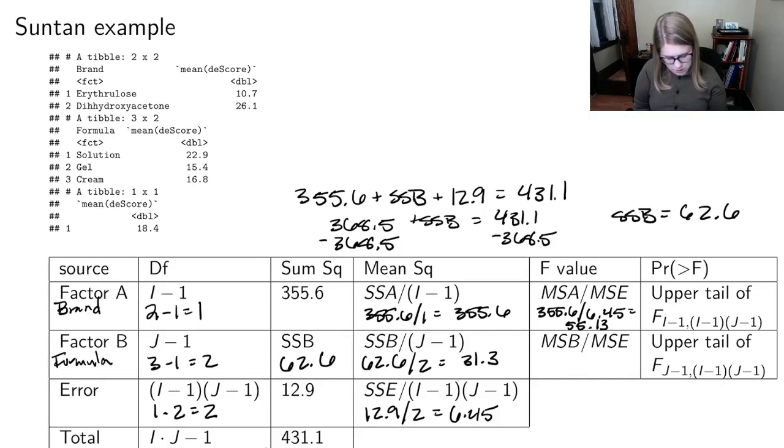And then for the mean square B, 31.3, again, divided by 6.45. And that's 4.85.